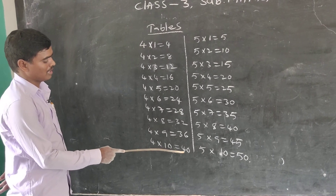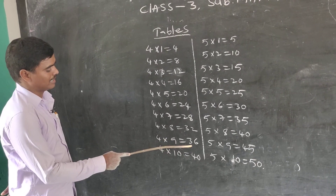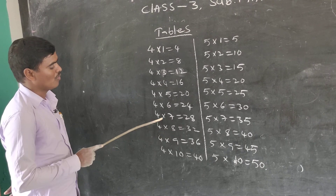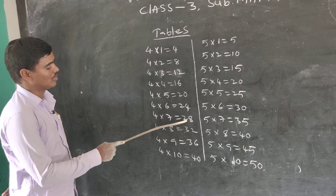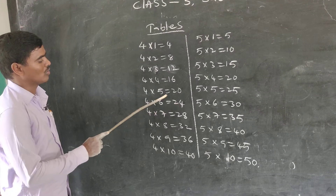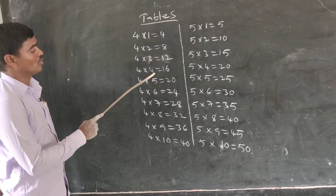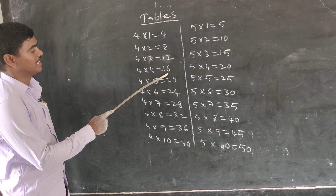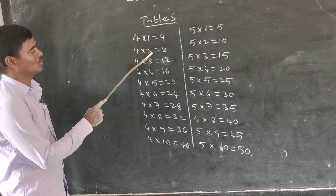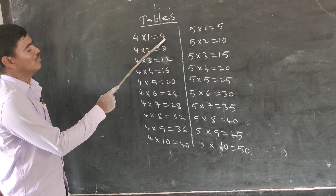Now reverse order: 4 tens are 40, 4 nines are 36, 4 eights are 32, 4 sevens are 28, 4 sixes are 24, 4 fives are 20, 4 fours are 16, 4 threes are 12, 4 twos are 8, 4 ones are 4.